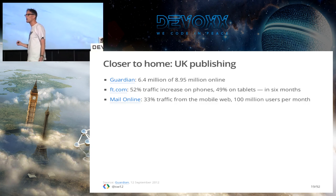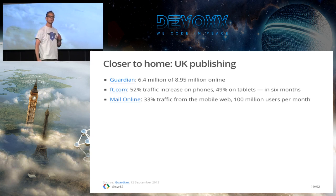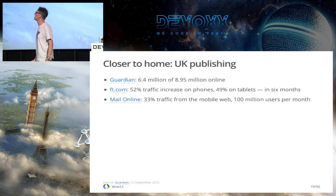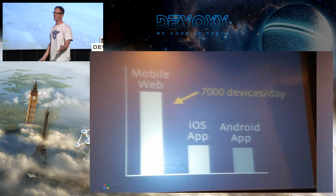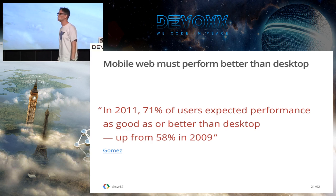Closer to home, in the UK, the Mail Online now has something like 100 million users per month — it's like the biggest news website in the world now — and a third of those are on mobile. So mobile is hugely important. This is a photograph of a Facebook presentation showing that while they have great native apps, their mobile web is still really, really important to them.